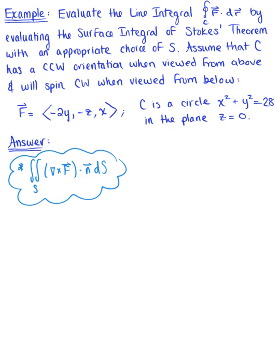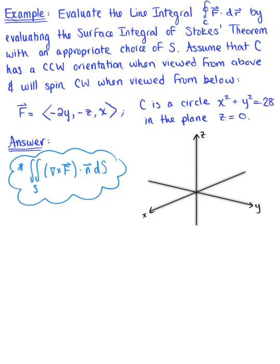Let's start by sketching this region. We have the z-axis, the x-axis, and the y-axis. If you have graphing paper it's always easiest to use; otherwise, just be sure to label everything. C is a circle x squared plus y squared equals 28 in the xy plane. Here is our curve C, oriented in the counterclockwise direction, and we're thinking about the surface created by this boundary region in space.